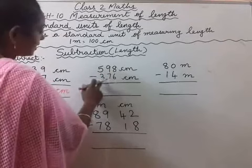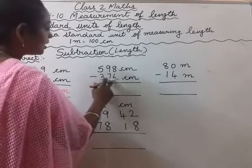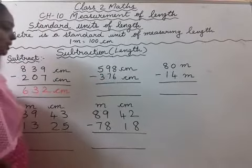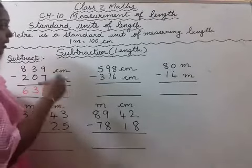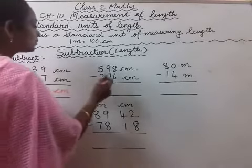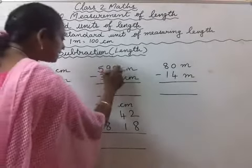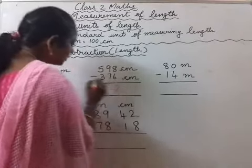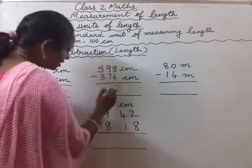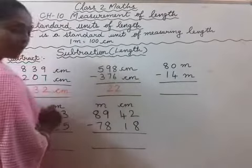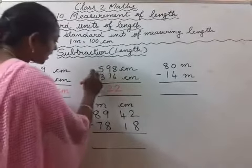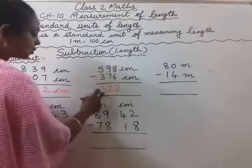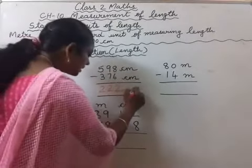Next, 598 centimeter minus 376 centimeter. We are going to subtract these two units of length. First, 8 minus 6 will be 2, then 9 minus 7 is 2, next 5 minus 3 is 2. So what is the answer? 222 centimeter.